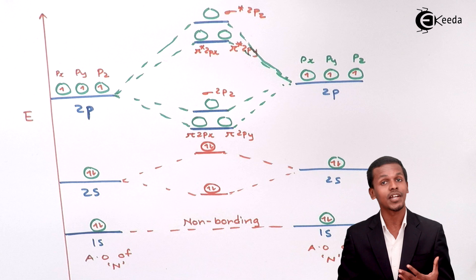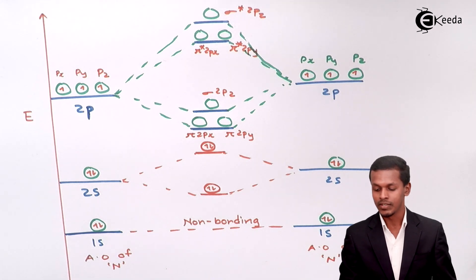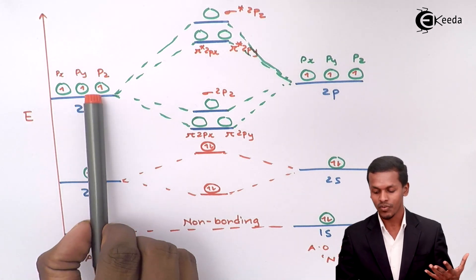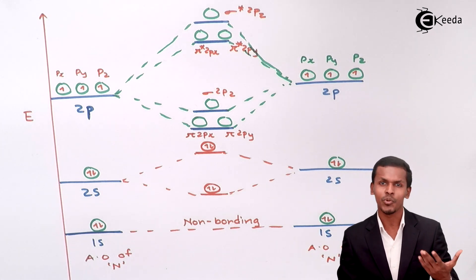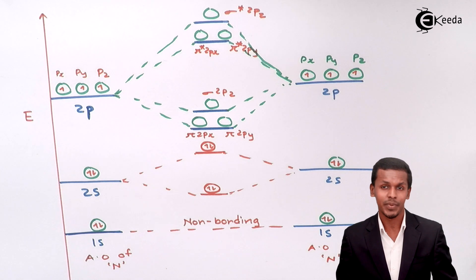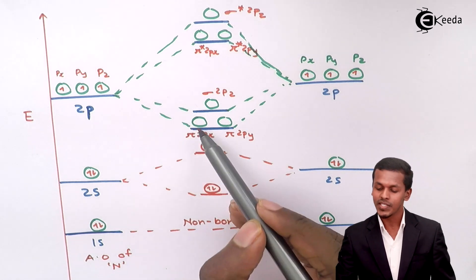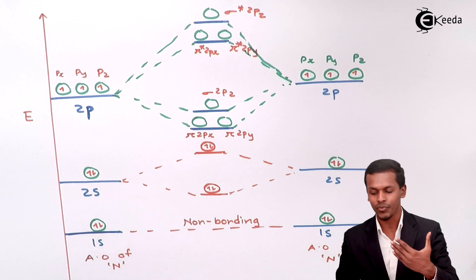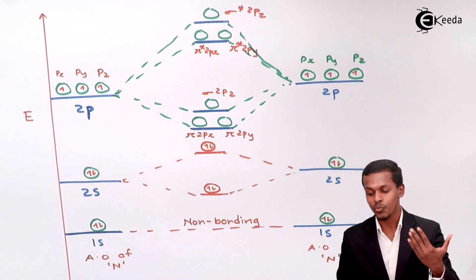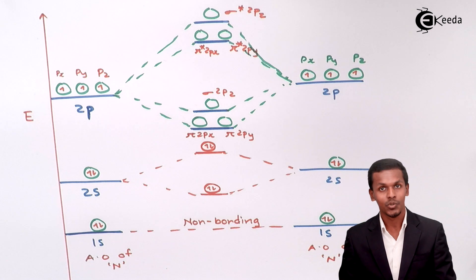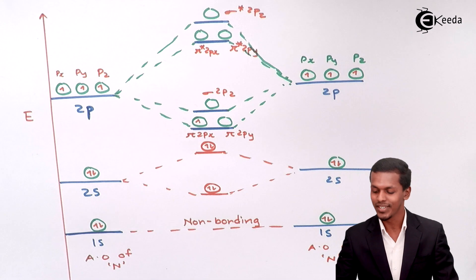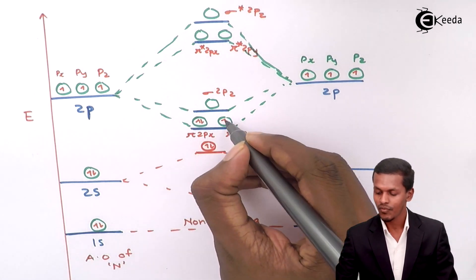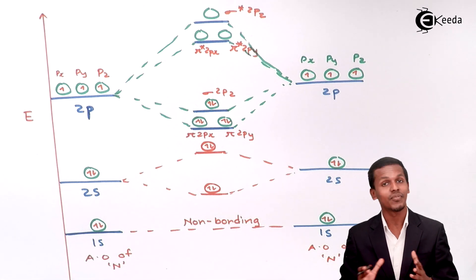Now we have basically 6 electrons in the 2p orbitals — 3 from the 2p of one nitrogen and 3 from the 2p subshell of the other nitrogen, making a total of 6 electrons. We fill according to the Aufbau principle as well as Hund's rule. The lower energy level is pi 2px compared to sigma 2pz, so we fill pi 2px first, then pi 2py, then sigma 2pz. Counting: 1, 2, 3, 4, 5, 6 — all six electrons are filled.